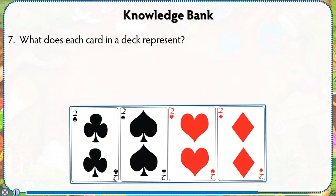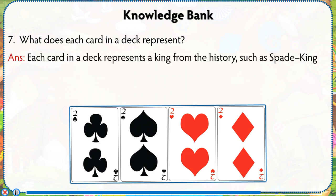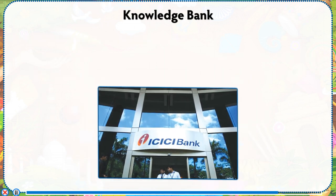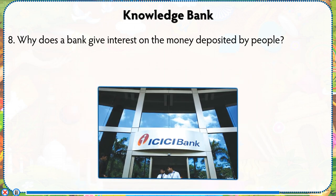Number 7: What does each card in a deck represent? Answer: Each card in a deck represents a king from history — Spade: King David; Heart: Charlemagne; Club: Alexander the Great; Diamond: Julius Caesar.